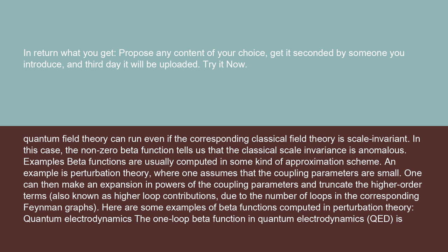Examples: beta functions are usually computed in some kind of approximation scheme. An example is perturbation theory, where one assumes that the coupling parameters are small. One can then make an expansion in powers of the coupling parameters and truncate the higher-order terms, also known as higher-loop contributions, due to the number of loops in the corresponding Feynman graphs.